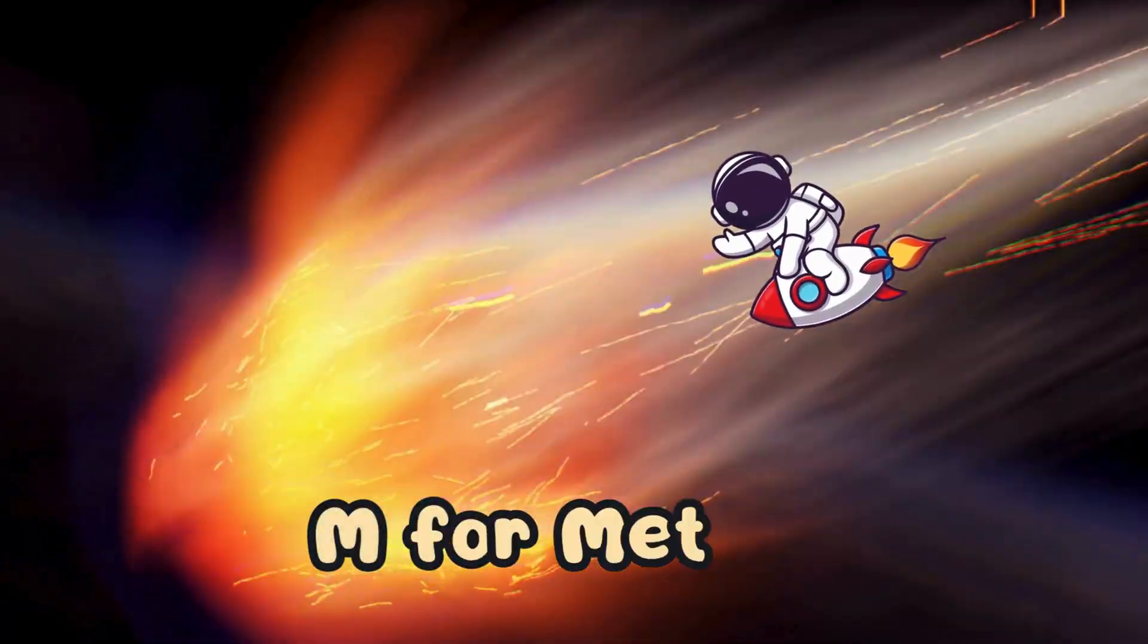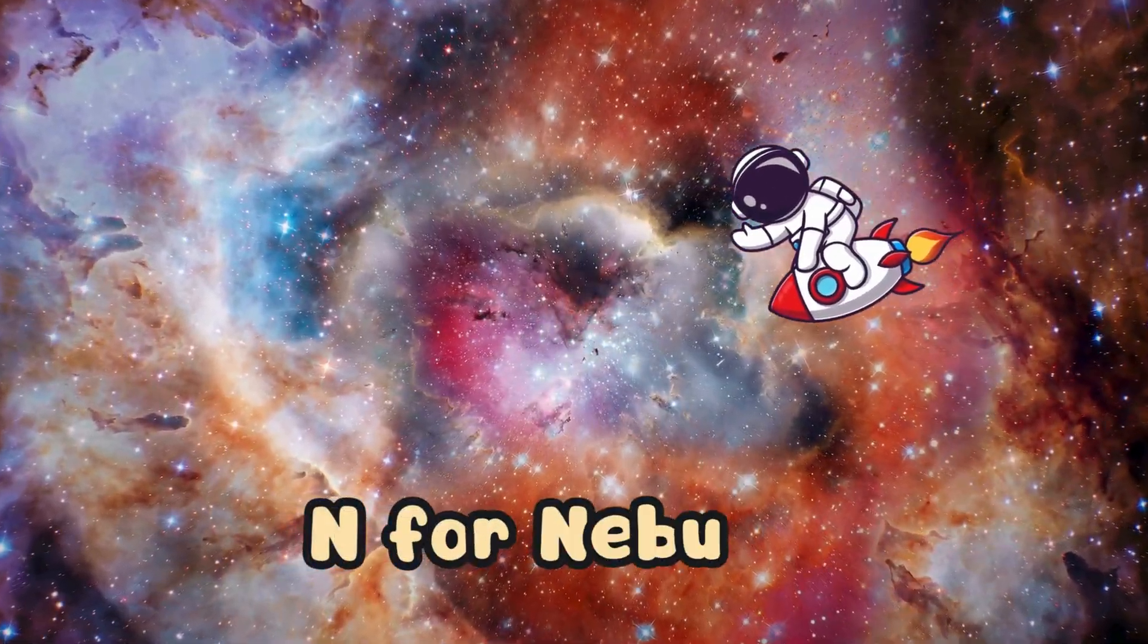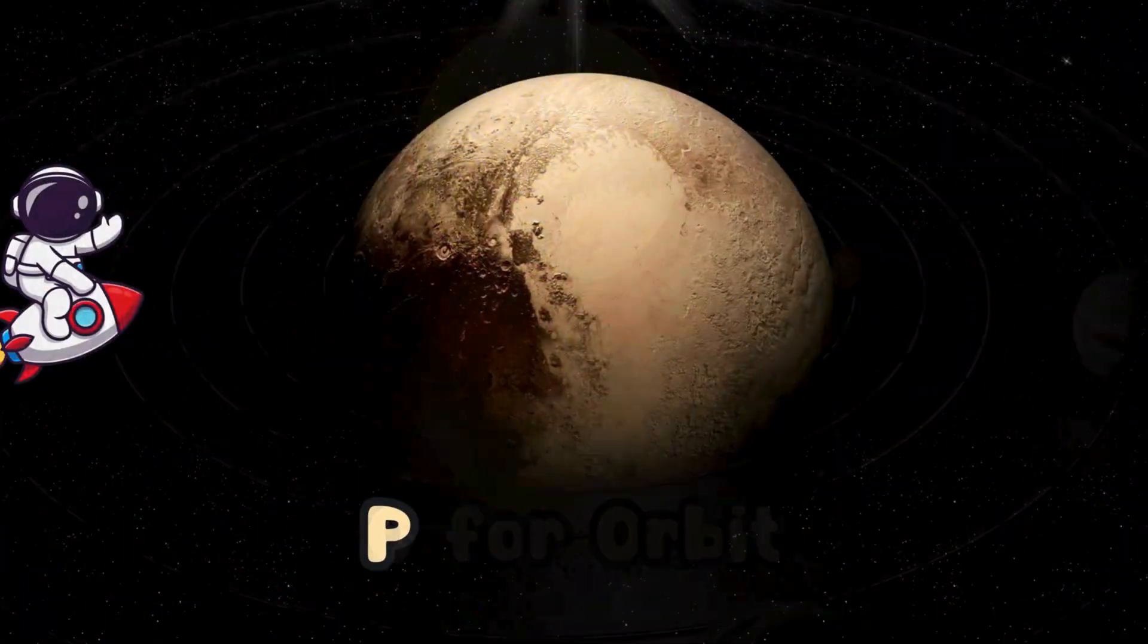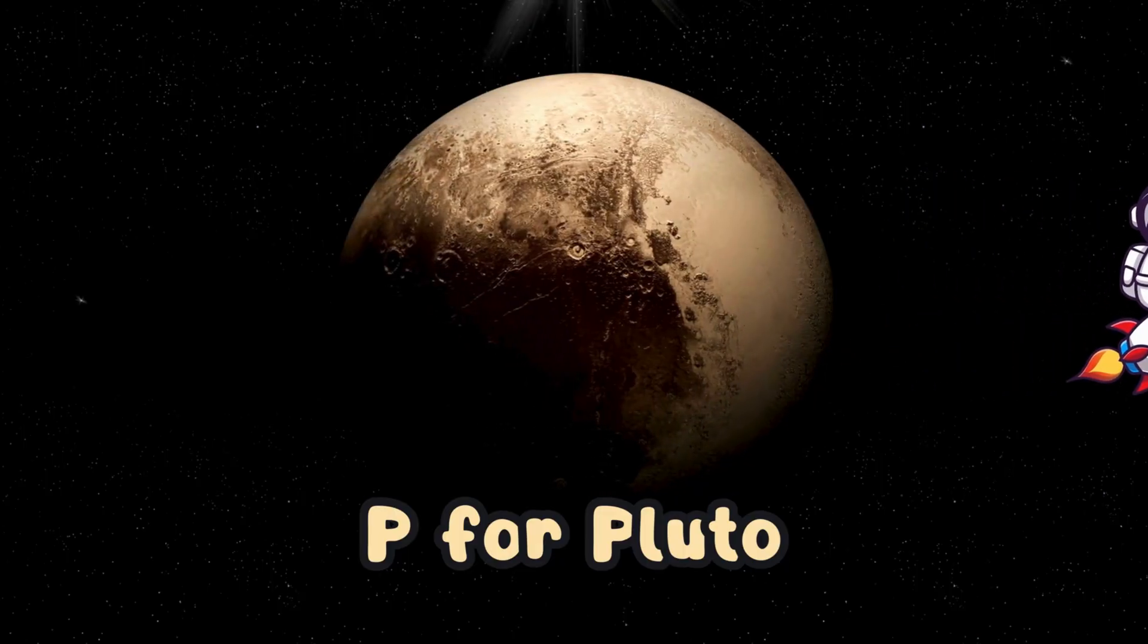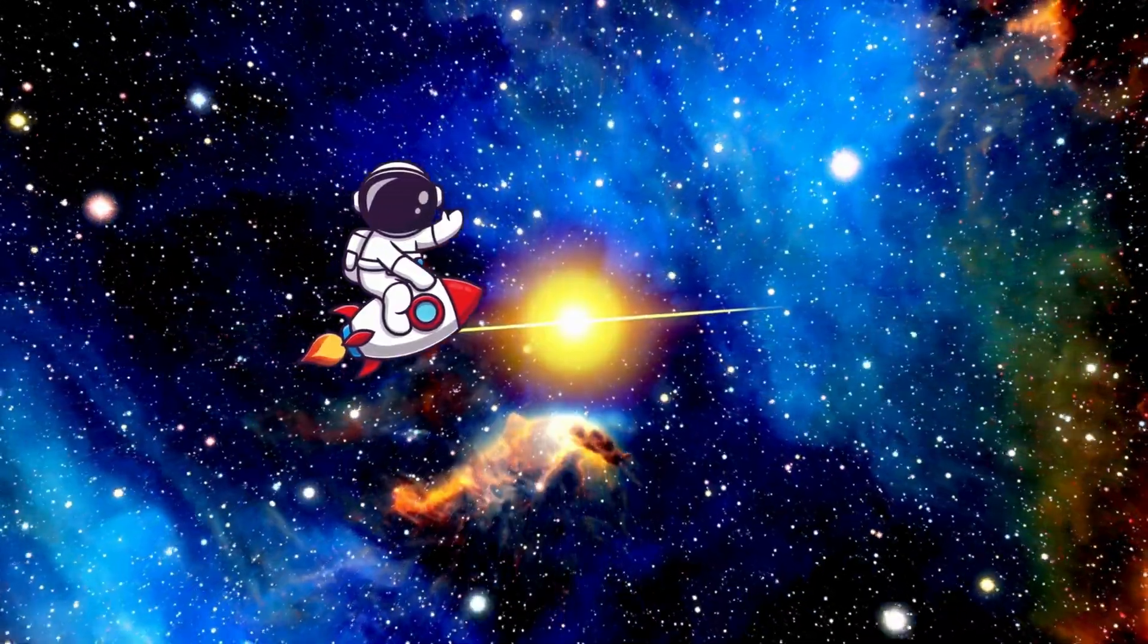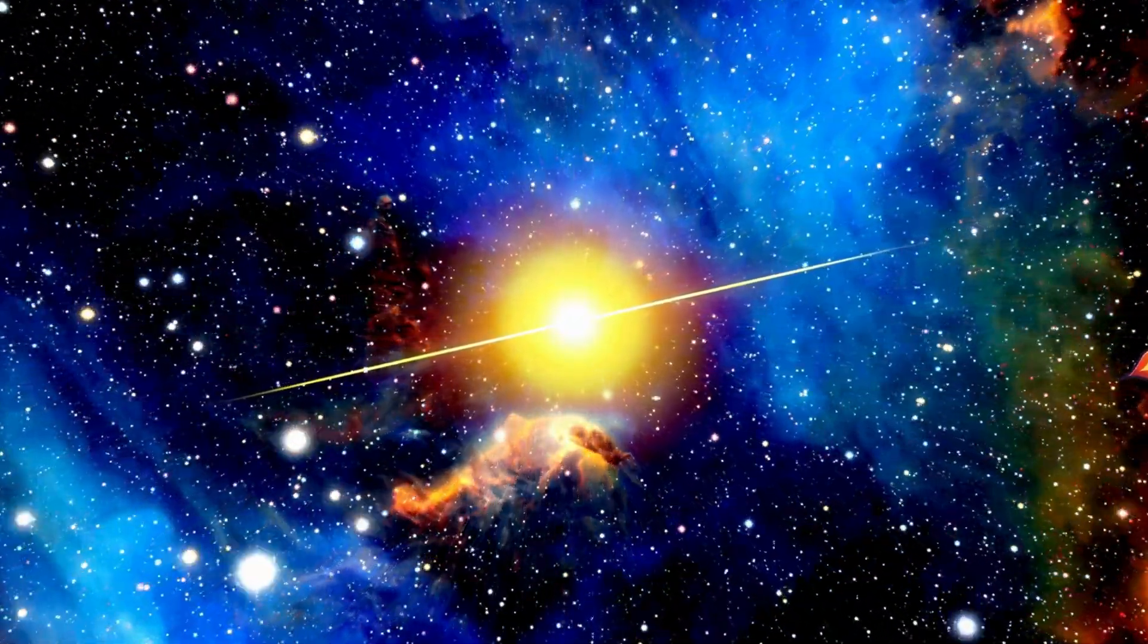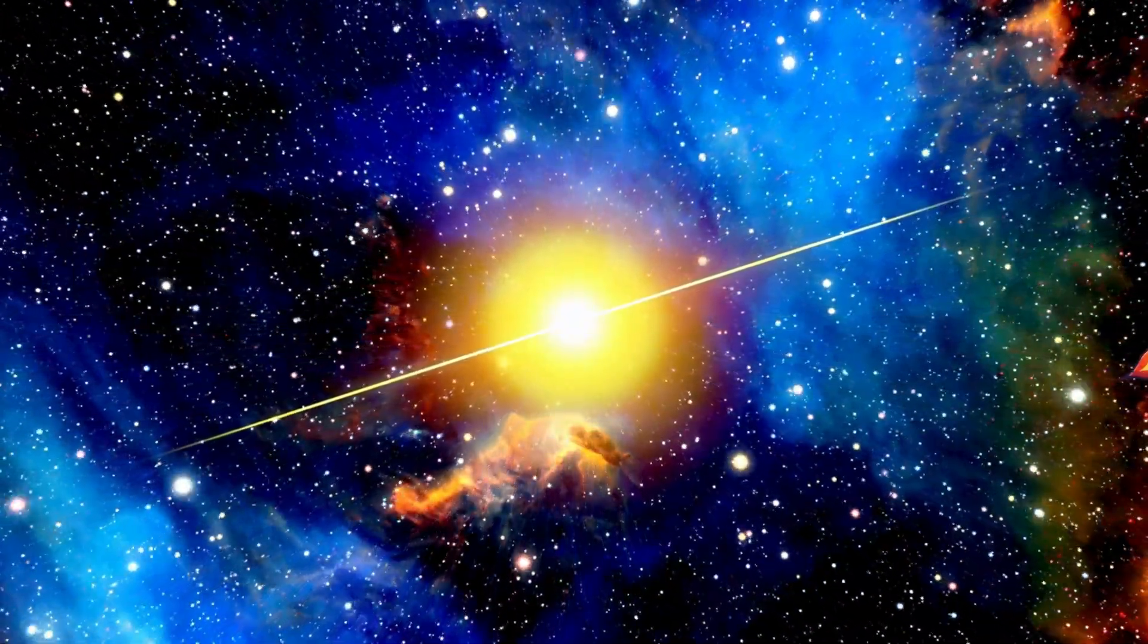M for meteors, falling bright. N for nebulae, glowing at night. O for orbit, spinning round. P for Pluto, way out of town. Come on kids, let's sing and play, learning the stars in a fun new way. From A to Z we're gonna see the wonders of space, so wild and free.